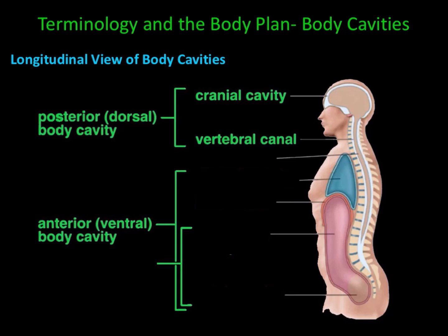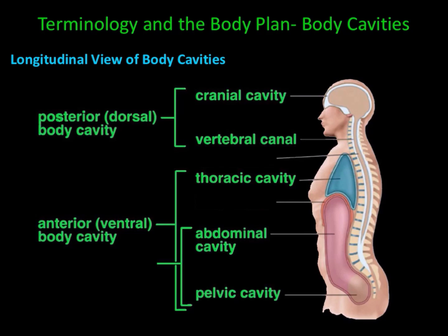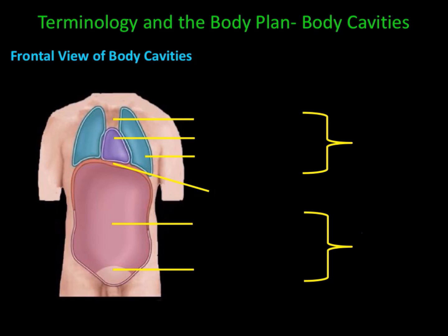The anterior cavity has three subdivisions: the thoracic cavity, the abdominal cavity, and the pelvic cavity. Sometimes the abdominal cavity and the pelvic cavity are combined and referred to as the abdominal pelvic cavity. The anterior cavity is made up of the thoracic cavity and the abdominal pelvic cavity.